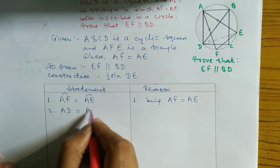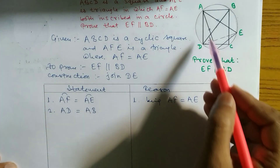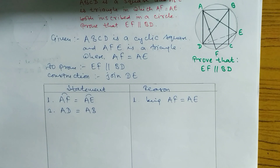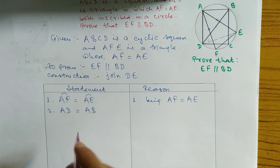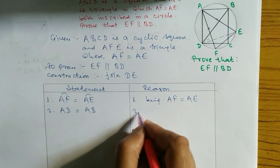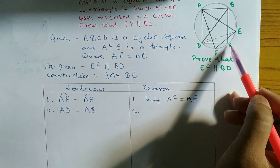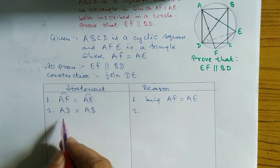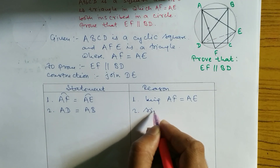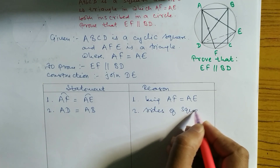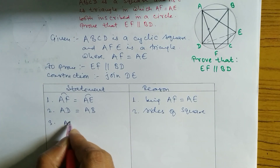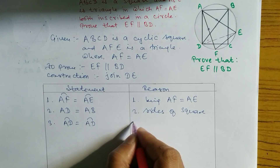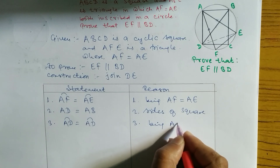In step two: AD is equal to AB, because in square ABCD all sides — AB, BC, CD, and AD — are equal. So AD equals AB. Statement three: since AD equals AB, arc AD is also equal to arc AB, because equal sides subtend equal arcs.